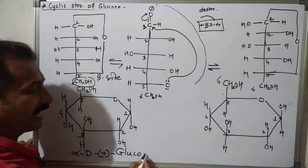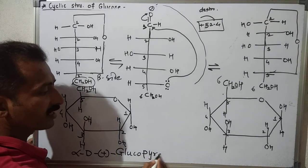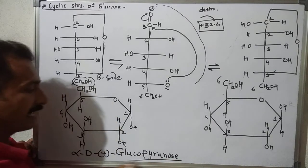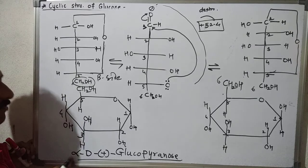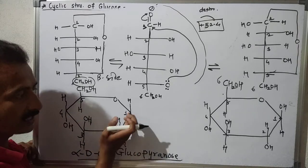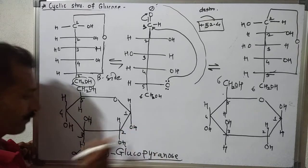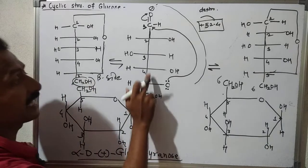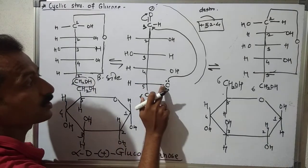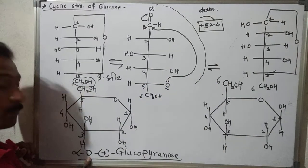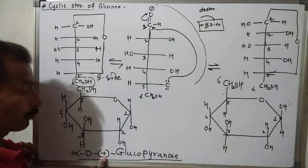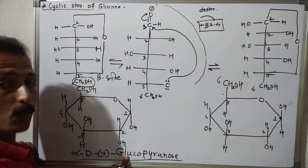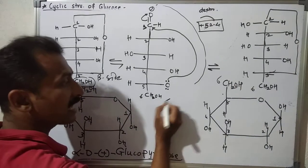The new word we are adding here is 'pyranose.' Alpha, lower side OH — carbon 1 is D (lowest chirality center OH on right), D-plus dextro rotation glucose — pyranose.